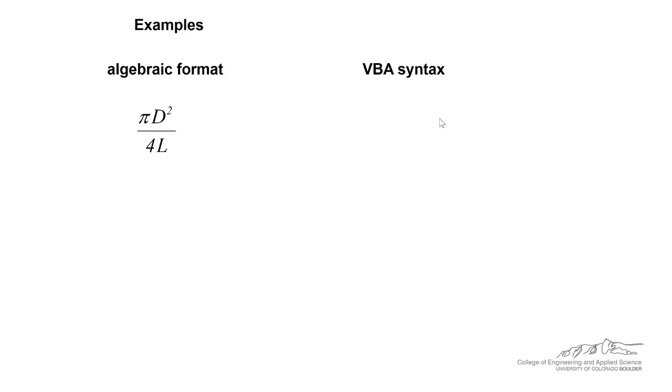Let's go through a couple more examples. We have pi D squared over 4L. There is no built-in pi function, so a good way to denote pi in VBA is to do 4 times the arctangent of 1. So the tangent of pi over 4 is equal to 1, so you can use that property to define that as pi. We can either write it like this, so this expression on the left would be written like that. Or if we don't use parentheses in the bottom, we can just divide twice, because the way that VBA reads syntax is left to right, so we can do that.